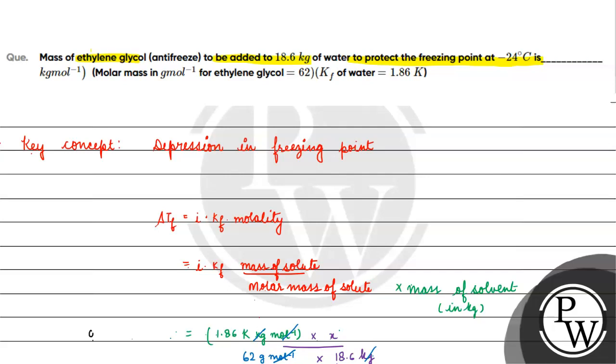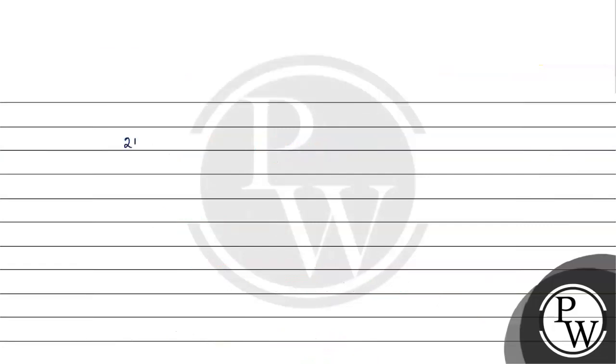Delta Tf equals 0 degree C minus -24 degree C. Always remember: if we change from degree C to Kelvin, like 0°C becomes 273 Kelvin and 5°C becomes 278 Kelvin, the difference is still 5 Kelvin, which equals 5 degree C. It's only a unit change. So the difference is the same: 24 Kelvin.